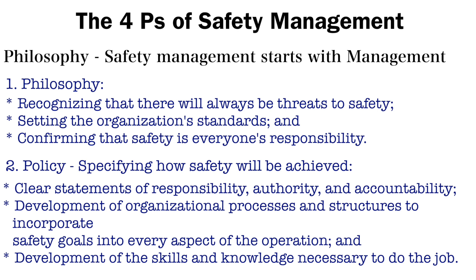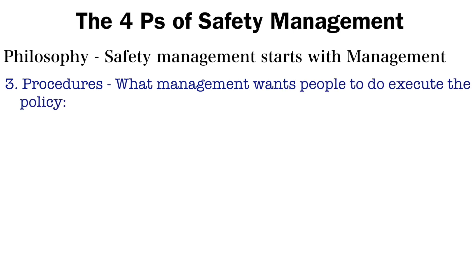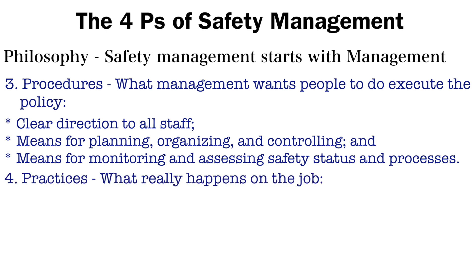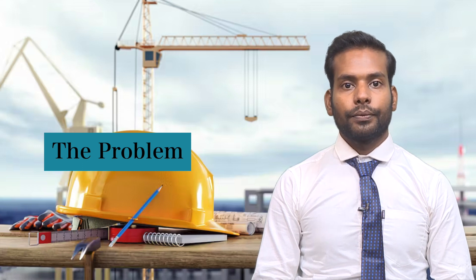The third major point is procedure — what safety management wants people to do. This involves executing the policy with clear direction, means of planning, organization, controlling, and monitoring, and assessing safety status and processes. The fourth major point is practice — what really happens on the job: following well-designed effective procedures, avoiding shortcuts that can detract from safety, and taking appropriate action when safety concerns are identified.